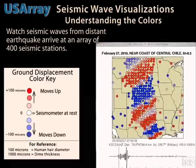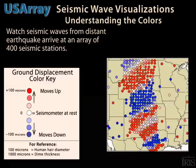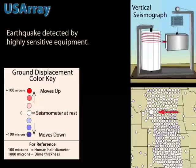U.S. Array offers an opportunity to watch the arrival of seismic waves from worldwide earthquakes. Circles on the map represent over 400 seismic stations. We'll focus on one station out of the Array.